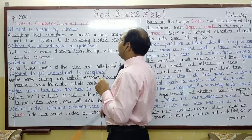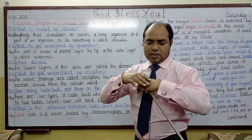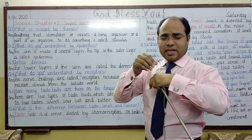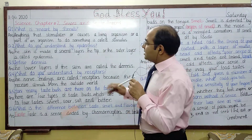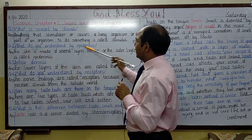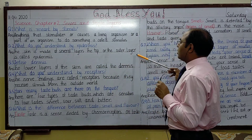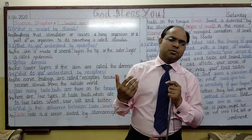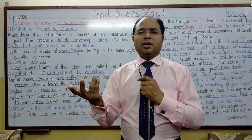Question number 2: what do you understand by epidermis? It is very easy to understand. The skin is made up of several layers. The top or the outer layer of the skin is called epidermis.